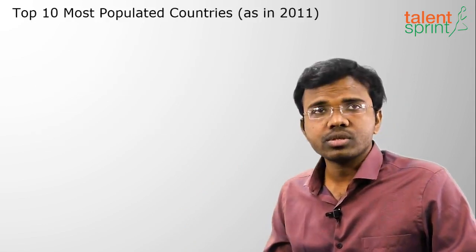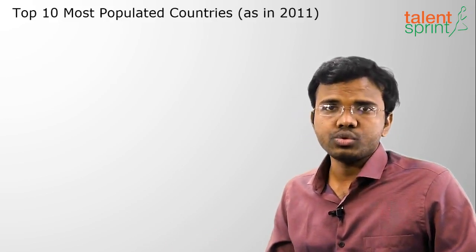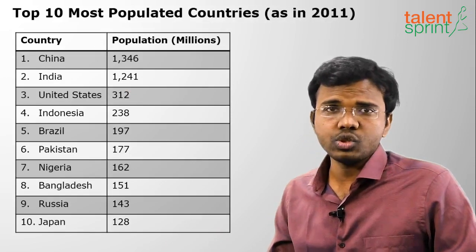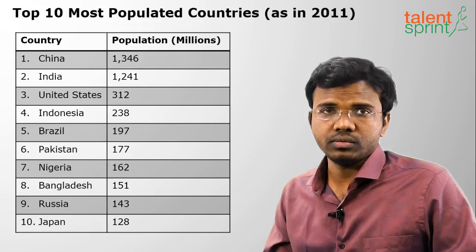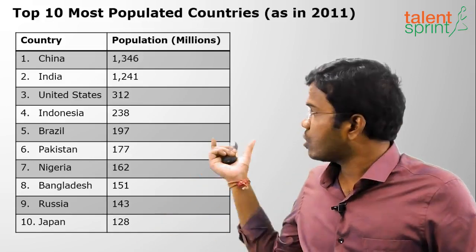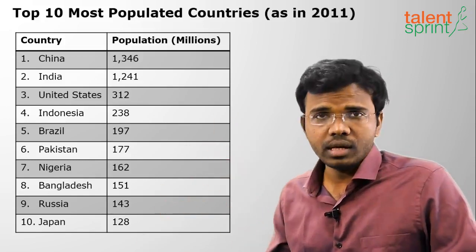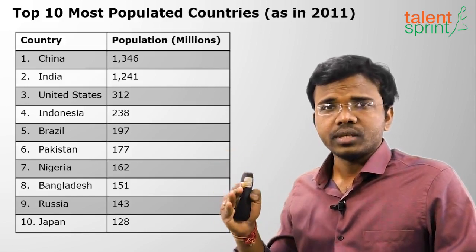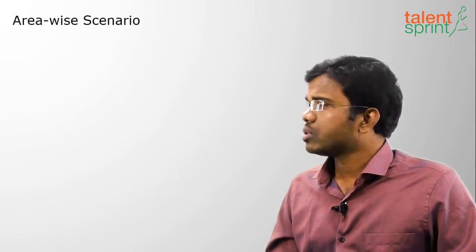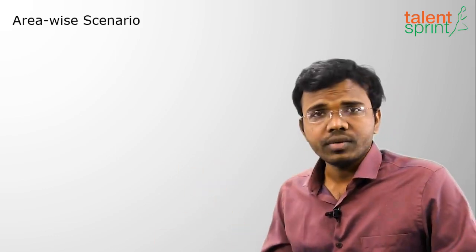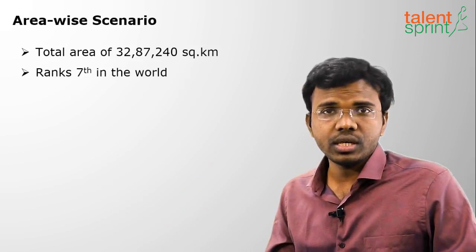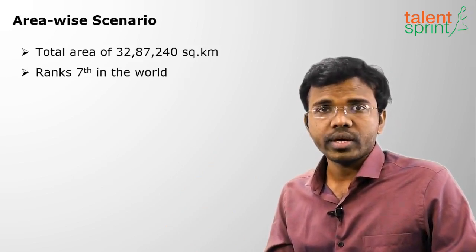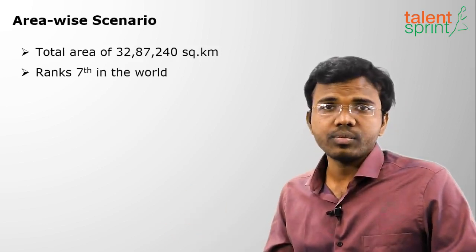Among the top most populated countries in 2011, China occupies first place with around 1.34 billion, India is second, and the US is third with only 312 million. Fourth is Indonesia and fifth is Brazil. In terms of area, India has 3,287,240 square kilometers and occupies seventh position globally, with Russia being first.